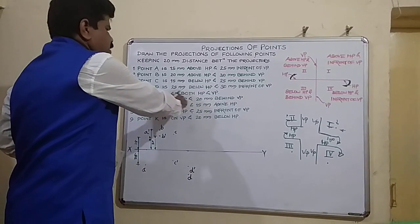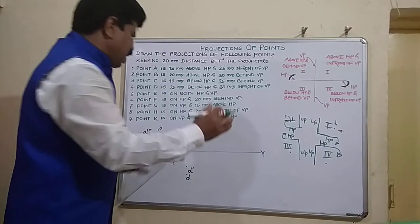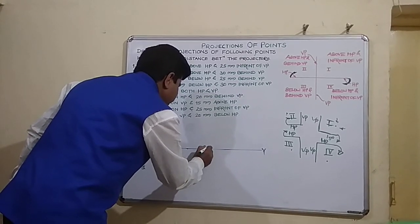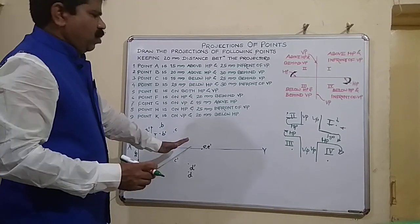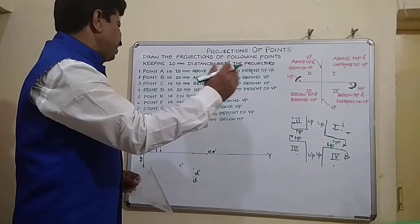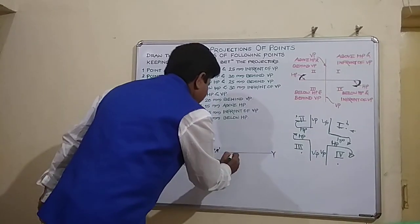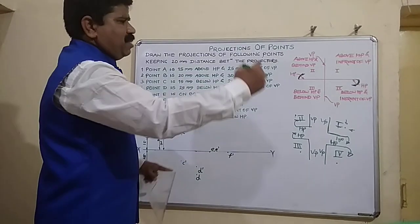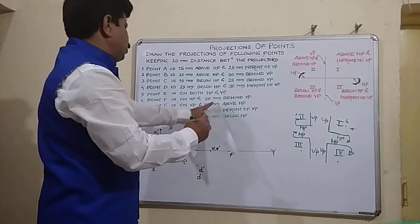Point E is on both HP and VP — this is the simplest case. If a point is on both HP and VP, it will lie on XY itself. So E and E dash will coincide on XY. Point F is on HP and 20 mm behind VP. Since it is on HP, the front view point F dash will be on XY. And 20 mm behind VP means the top view point F will be above XY, 20 mm above it.